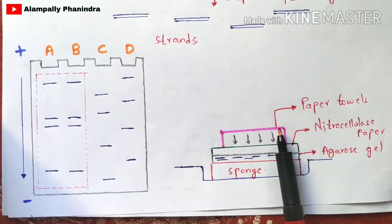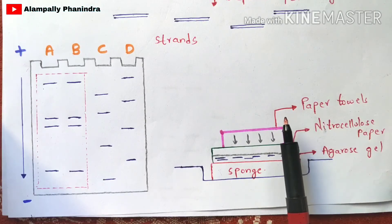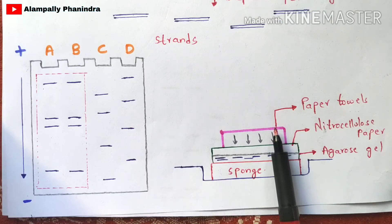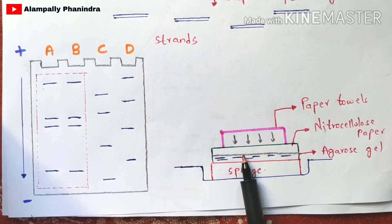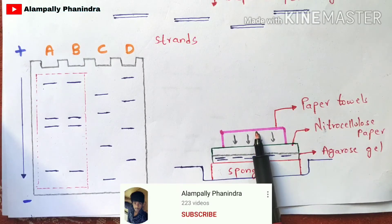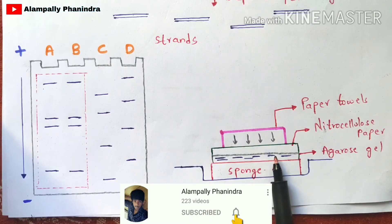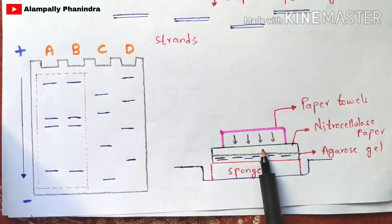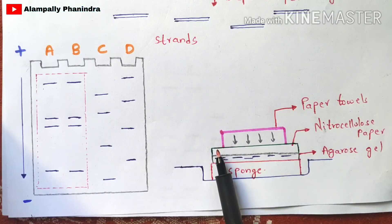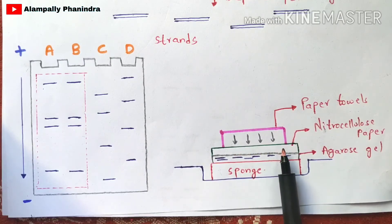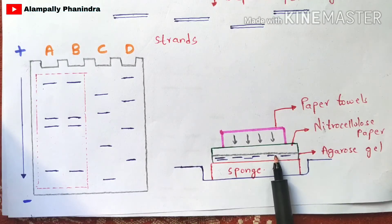On top of the nitrocellulose paper you place paper towels. The weight of the paper towels applies pressure downward. Due to this pressure, the DNA strands from the agarose gel migrate toward the nitrocellulose paper. The DNA strands move to and attach onto the nitrocellulose paper because of the pressure applied by the paper towels.